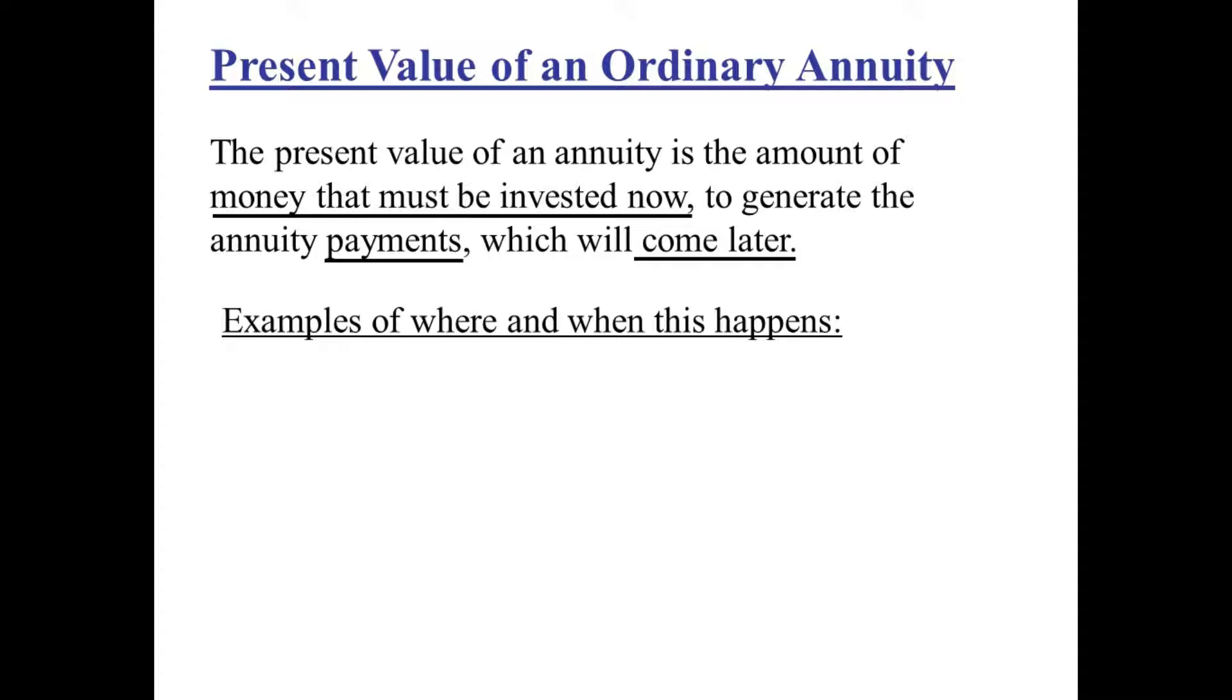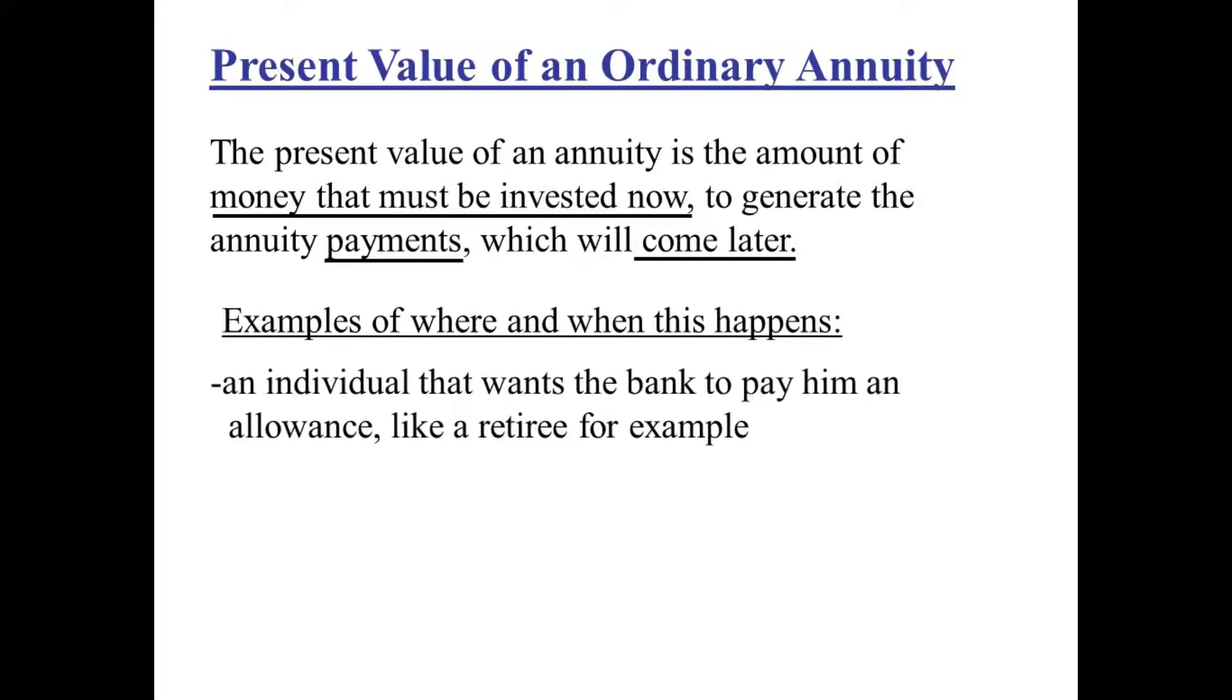Some situations where this happens. Consider an individual that wants the bank to pay him an allowance, like a retiree, for example. Someone who's worked all of his life and saves up some money and says, okay, bank, I'm going to give you a lot of money, and then you're going to give me an allowance. Every month, I can rely on you sending me a check. So this is someone who might want to make use of the present value of an annuity.